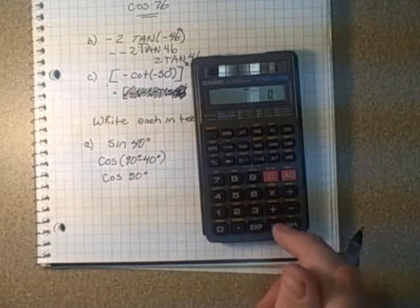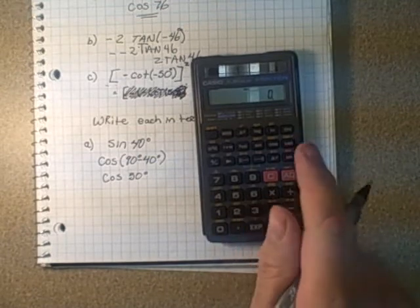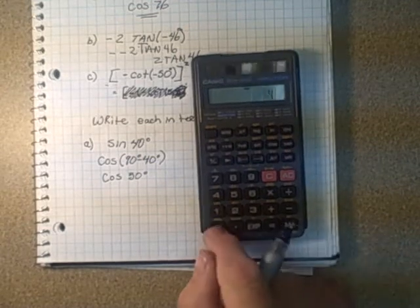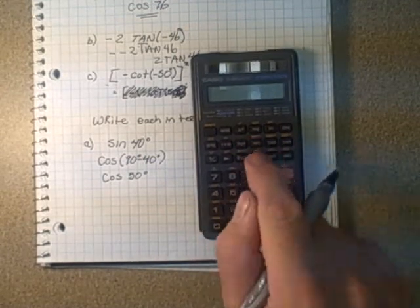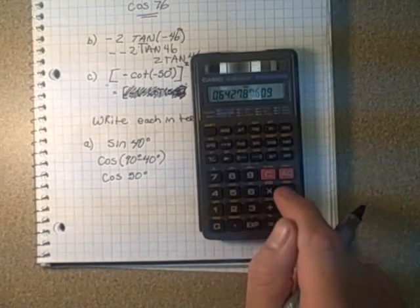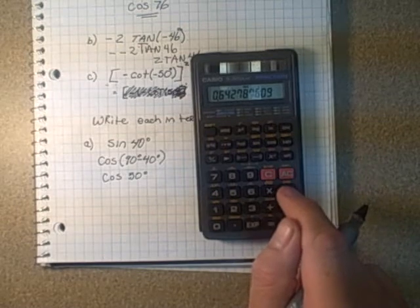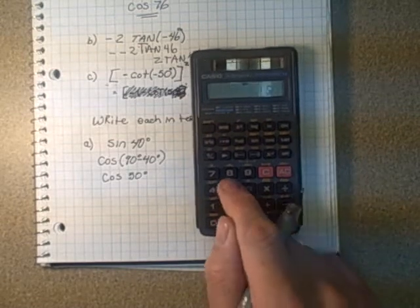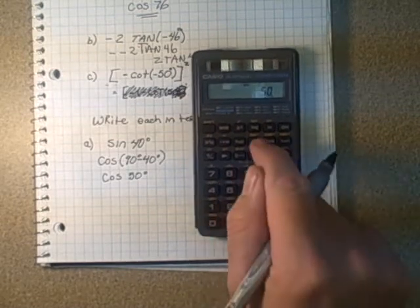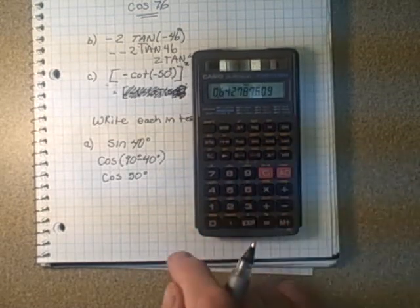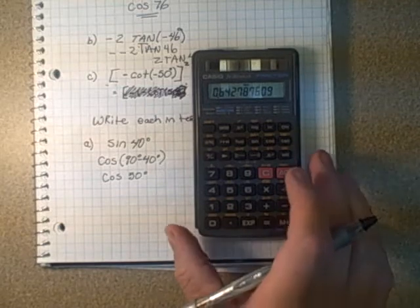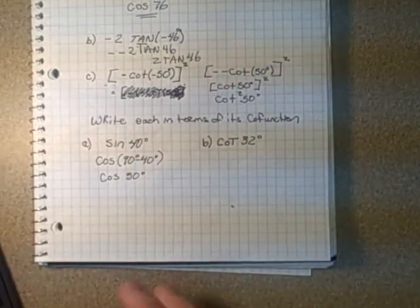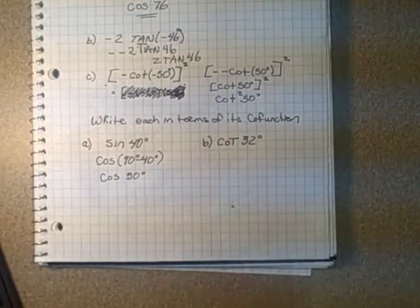Let's check that on the calculator — make sure it's in degrees. Sine 40 gives 0.6427; cosine 50 gives 0.6428. So we did that one correctly.